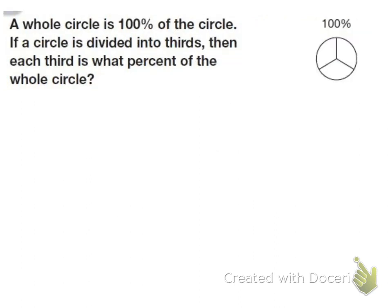Alright, let's do another one. So this says a whole circle is 100% of the circle. If a circle is divided into thirds, then each third is what percent? So to find the percent, we're going to take the 100% and divide it into thirds.